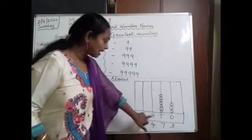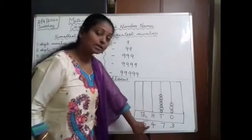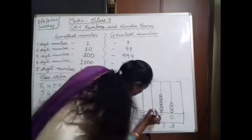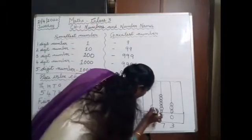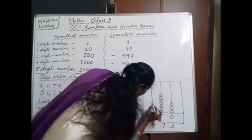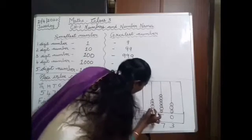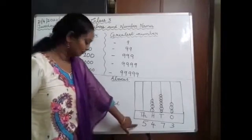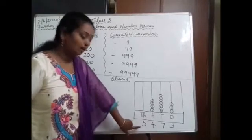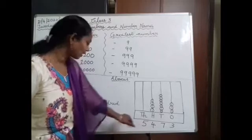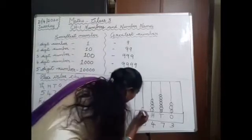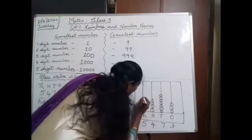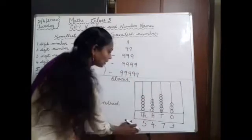Next, in the 100's place, the number is 4. So we draw 4 balls — 1, 2, 3, 4. Next, in the 1000's place, the number is 5. So we draw 5 balls — 1, 2, 3, 4, 5.